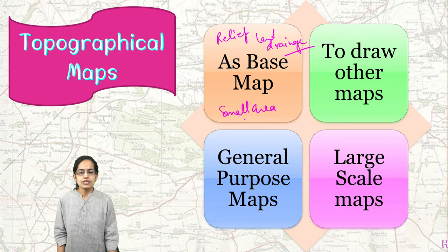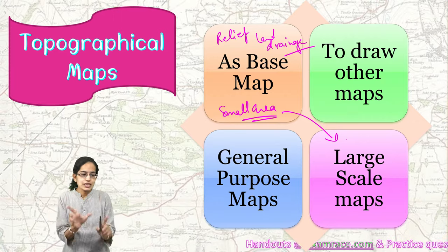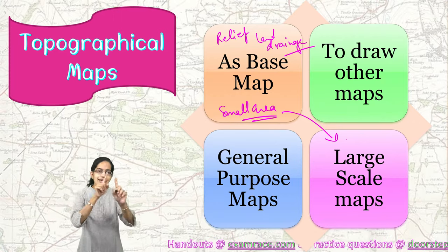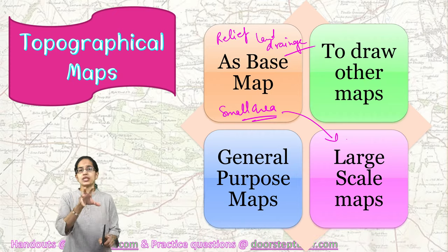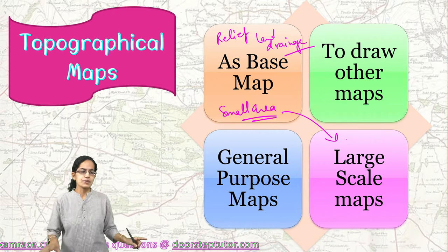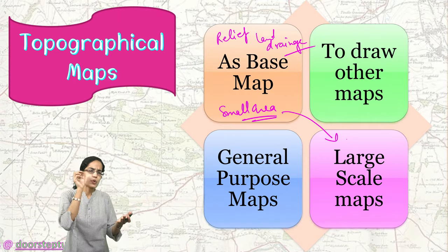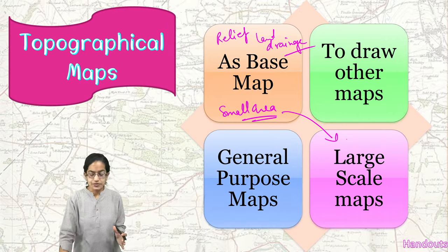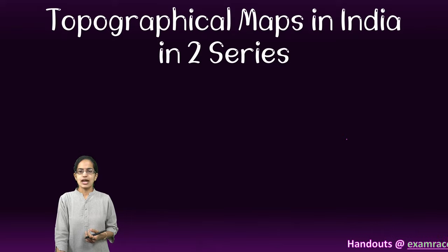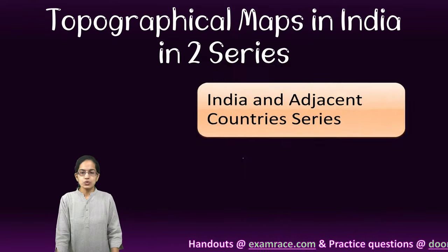Topographical maps are a general purpose map and they represent a small area. Since they represent a small area, they are called large scale maps. The scale is large but the area represented is a small part of a district or part of a city in one topo sheet, which makes it much more detailed, much more fine, and much more comprehensive in terms of the information that is there. In India, the topographical maps come under two series.